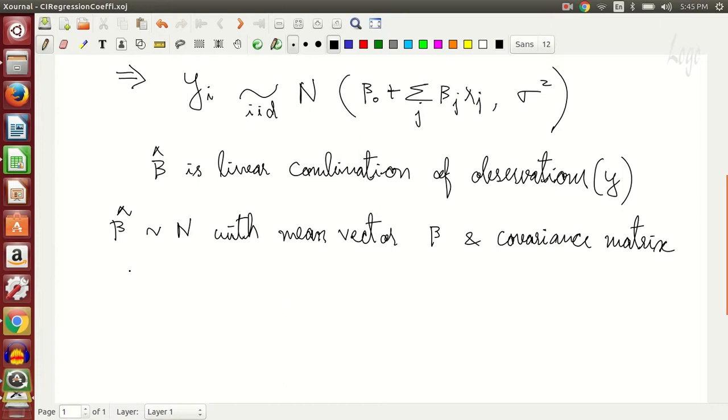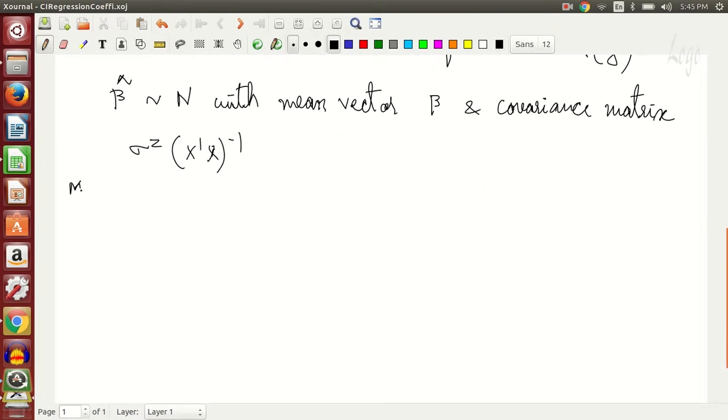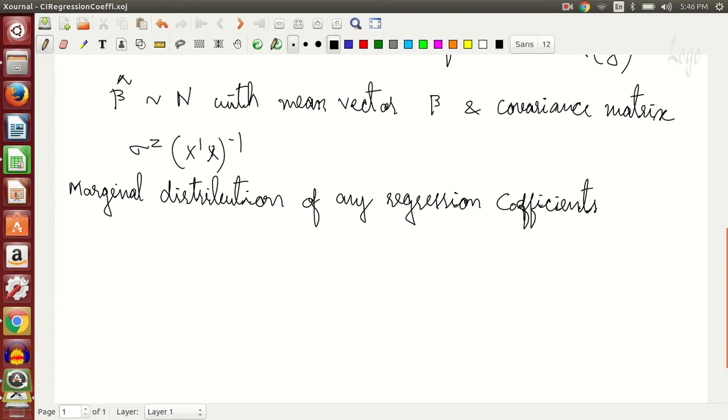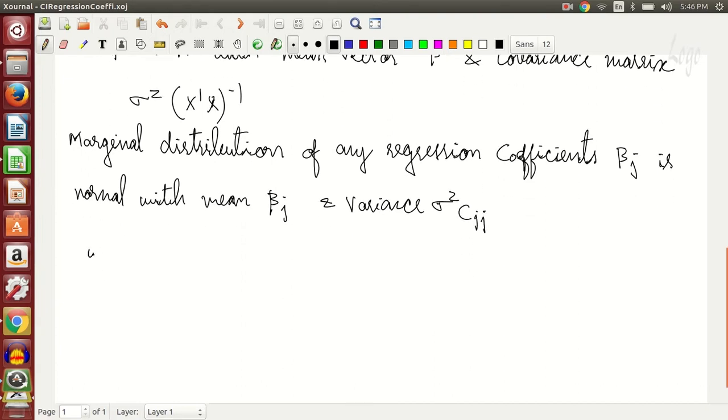This is given by sigma square x transpose x inverse. Marginal distribution of any regression coefficient beta j is normal with mean beta j and variance sigma square c jj.